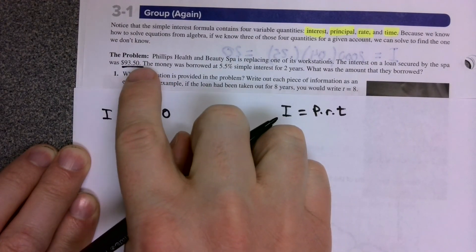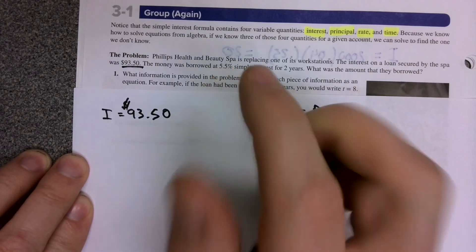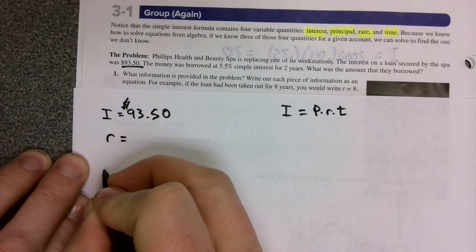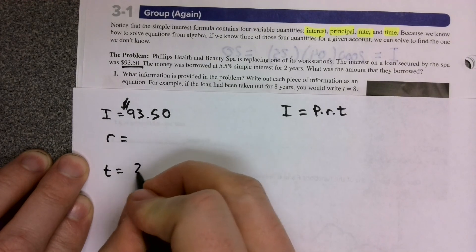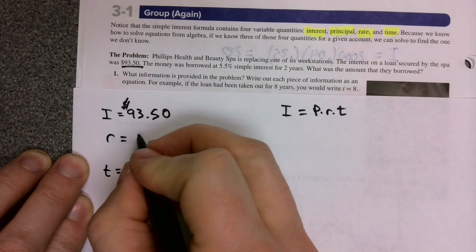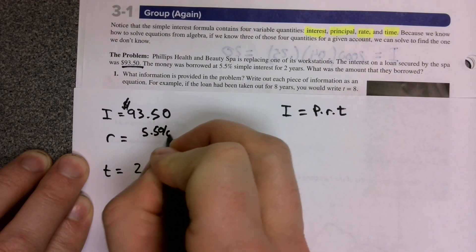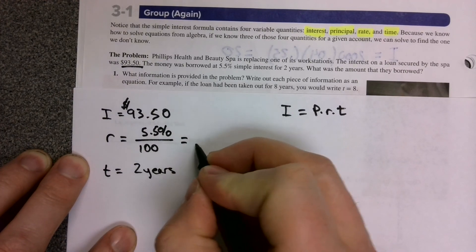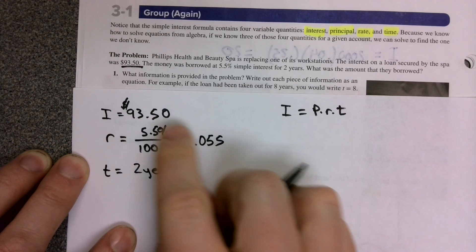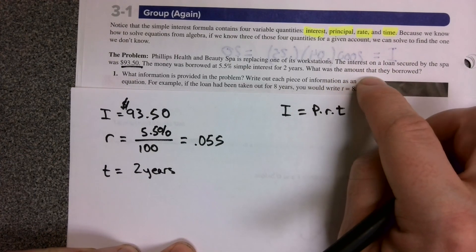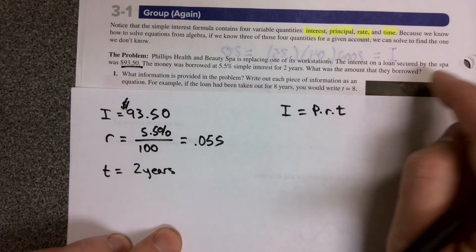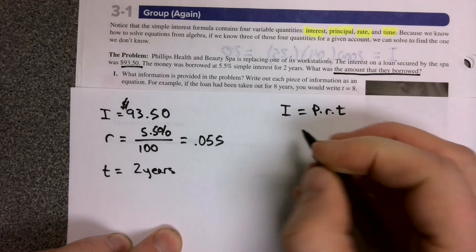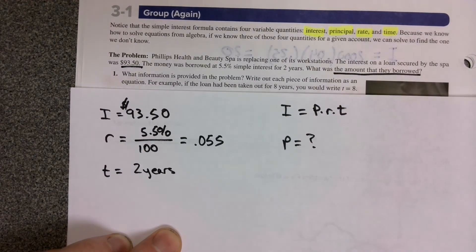The problem then continues. The money was borrowed at a 5.5% simple interest for two years. So our T here is two years, and our 5.5% interest rate is 5.5% divided by 100, which is 0.055. Those are the three things we have. The question is, what was the amount that they borrowed? In other words, what does P equal?